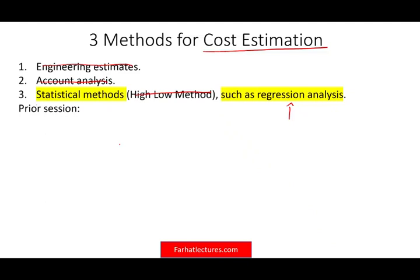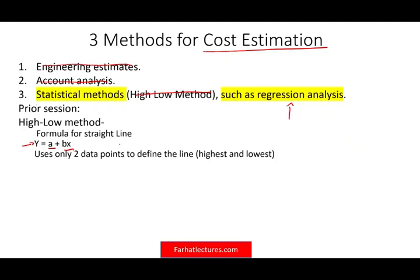In the prior session, we looked at the high-low method. We basically end up with a formula for the straight line: y equals a plus bx, where a is the fixed cost, bx is the variable cost, and y is the total cost. We use this method based on two data points to define this line — the highest point and the lowest point — which is why it's called the high-low method.